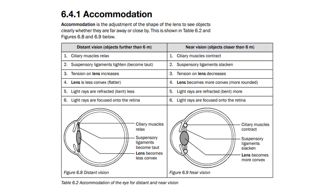Hi guys, today we'll be looking at the process of accommodation in the eye. Accommodation is the adjustment of shape of the lens to see objects clearly, whether they are far away or close by.